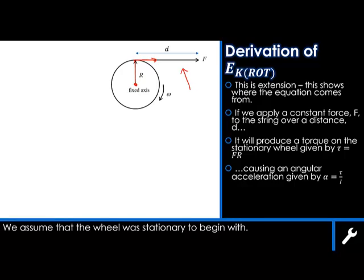And that'll cause an angular acceleration given by α = τ/I, where I is the rotational inertia of the wheel, and the angular displacement will be equal to the distance that we've pulled the string divided by the radius.